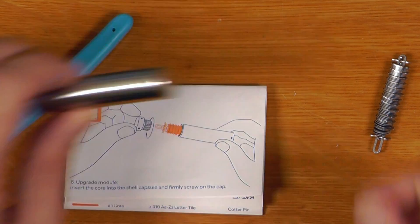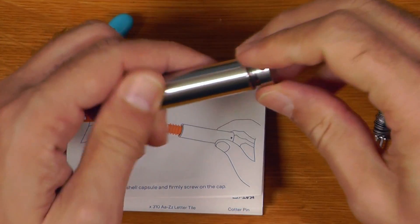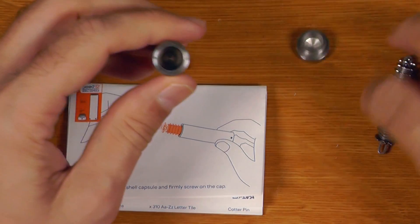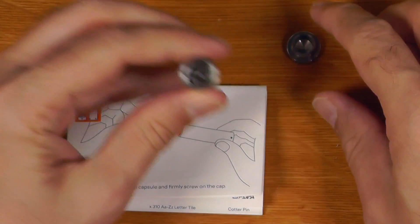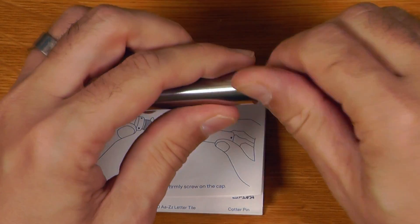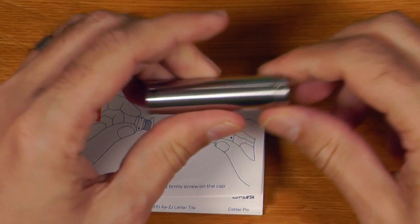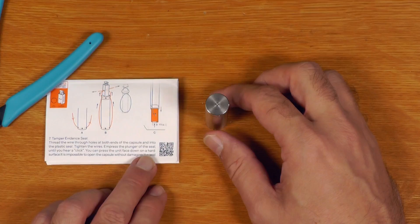So, basically, step six is pretty straightforward. We pretty much just get the capsule, open it up and put that in there. Then this gets screwed up. So, that is step six.